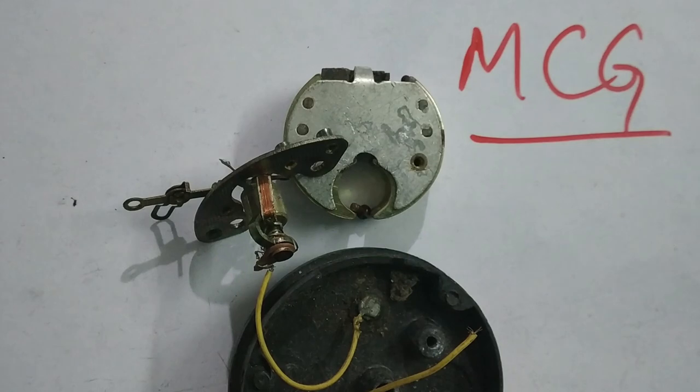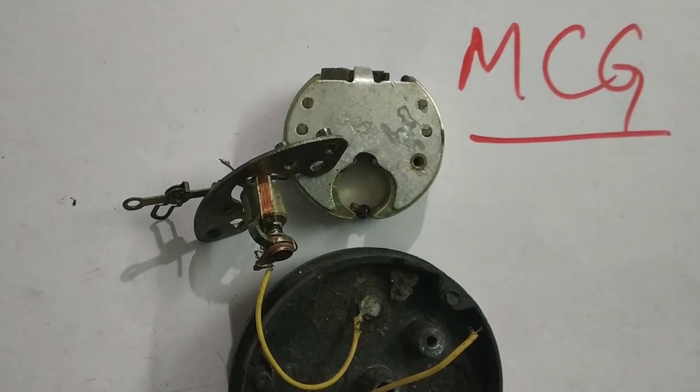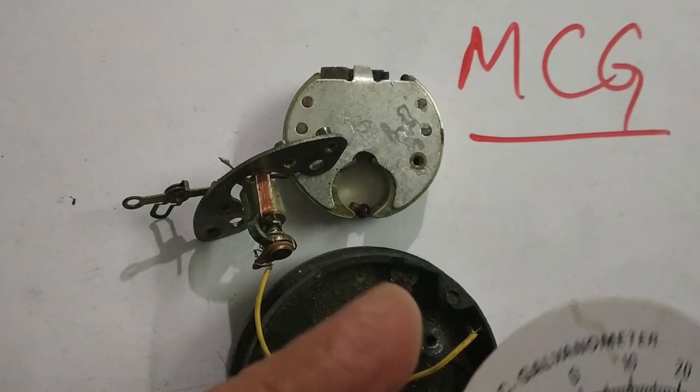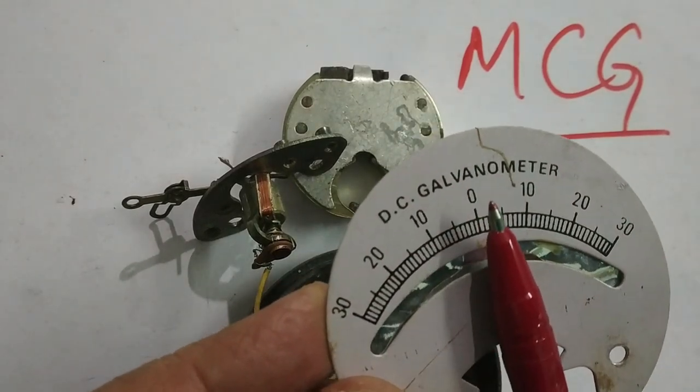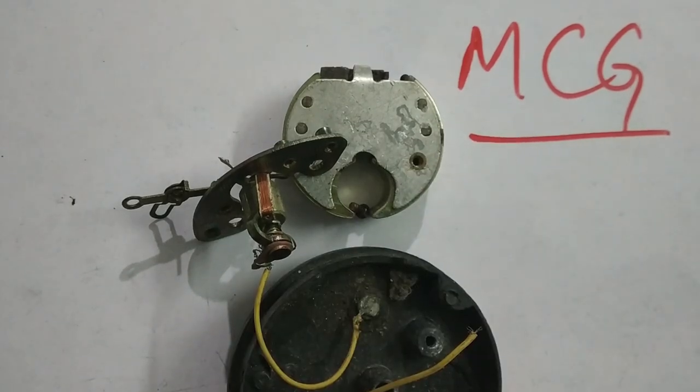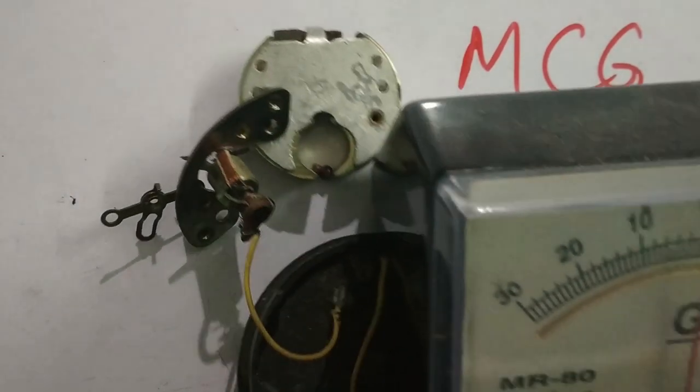Now, when the coil is rotated, a needle is connected here, and that needle will be placed on this surface. You can see the original galvanometer.